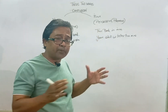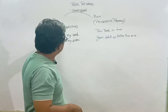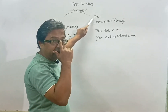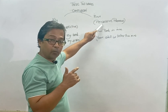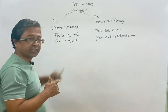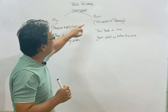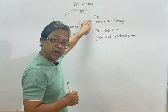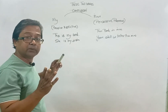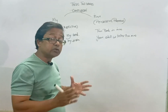It sounds similar but there are basic differences. When you use my, it is a possessive adjective. When you use mine, it is a possessive pronoun — it is used instead of a noun. My is used as a possessive adjective. Mine is used as a possessive pronoun. My is used before a noun, and it is used as an adjective.